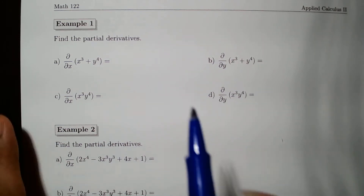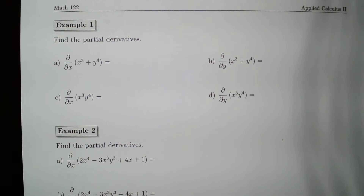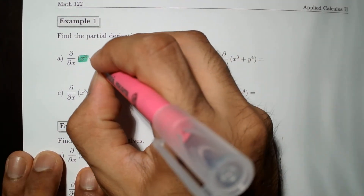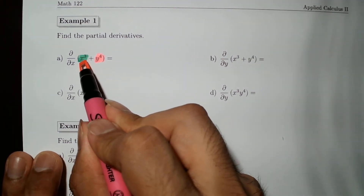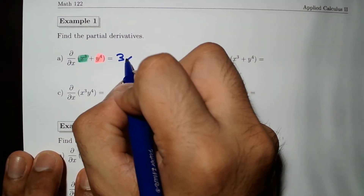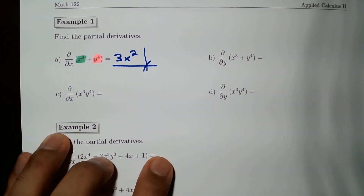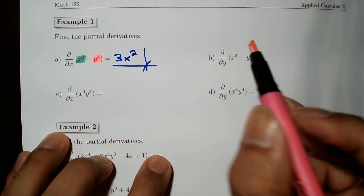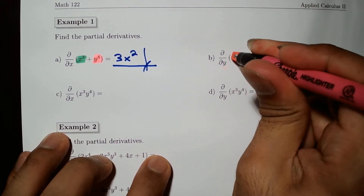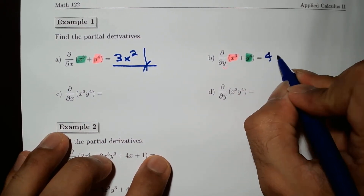Let's take the partial derivative of x³ + y⁴. With respect to x, we differentiate x³ to get 3x², but y⁴ is a constant so its derivative is zero. With respect to y, x³ is a constant so it contributes zero, and the derivative of y⁴ is 4y³.